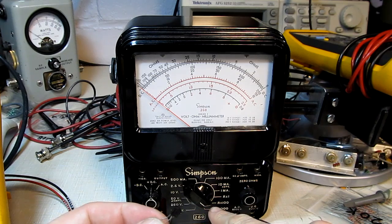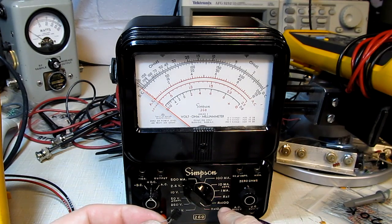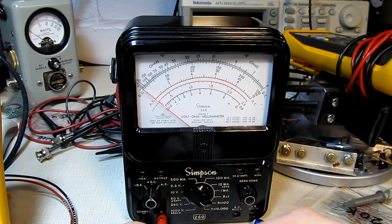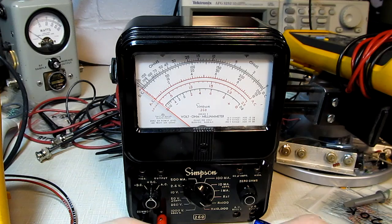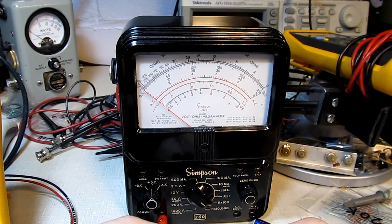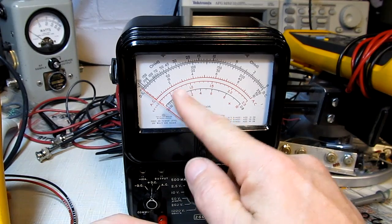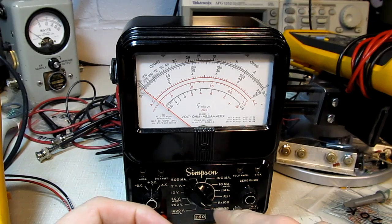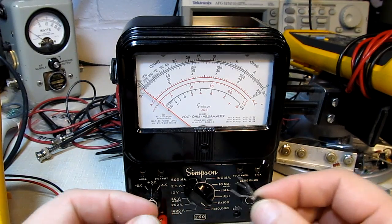We'll set up the millimeter to measure resistance and you can use like an R times 10 R times a hundred mode even R times one it really isn't that important. If you go up to a really sensitive modes then you run the risk of thinking there might be some conduction but you're just seeing leakage through your fingers so using a lower resistance range is often helpful.